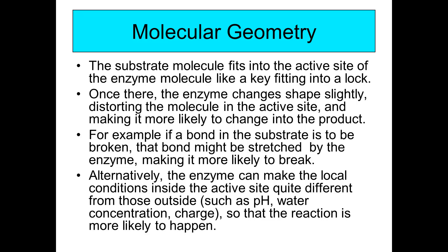If a bond in the substrate is to be broken, that bond might be stretched by the enzyme making it more likely to break. Or the enzyme can make local conditions inside the active site quite different from those outside: the pH can shift, there could be a different water concentration or charge. In the case of DNA polymerases and DNA restriction enzymes, there's a magnesium ion brought into close contact with a bond, and that geometry increases the rate of the reaction.